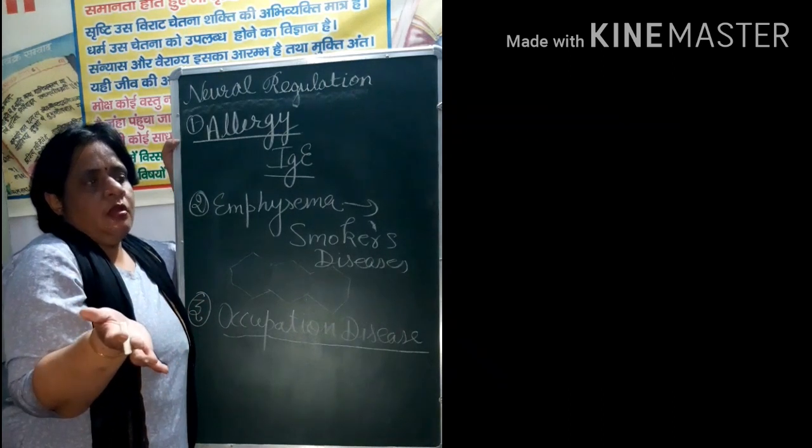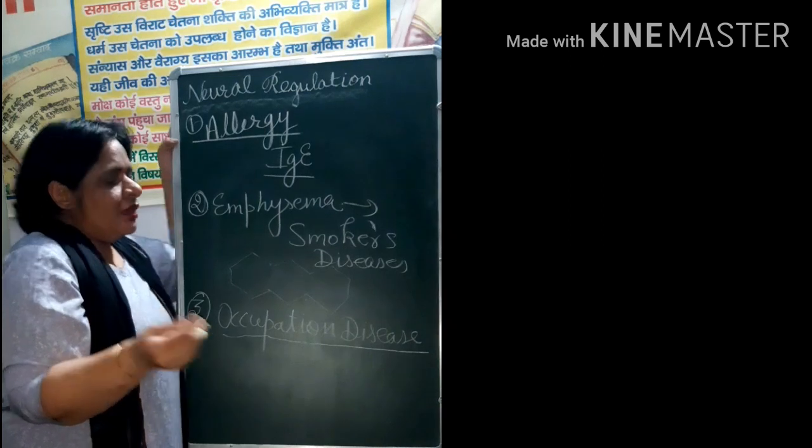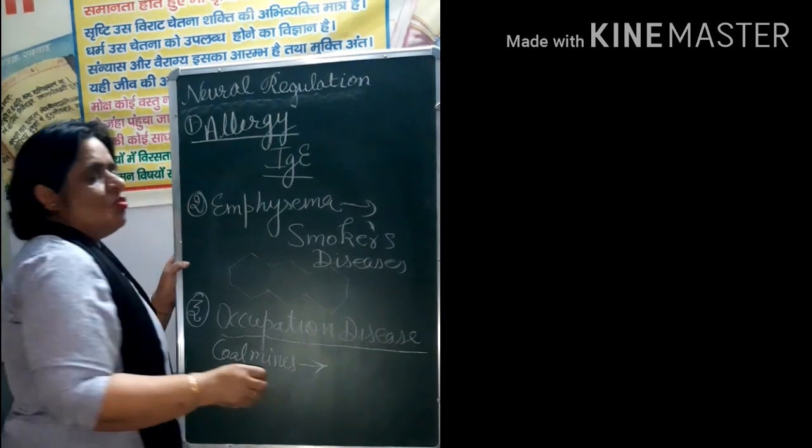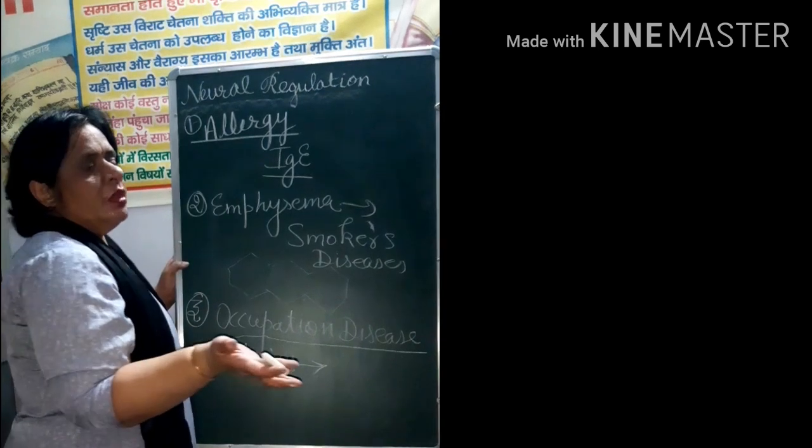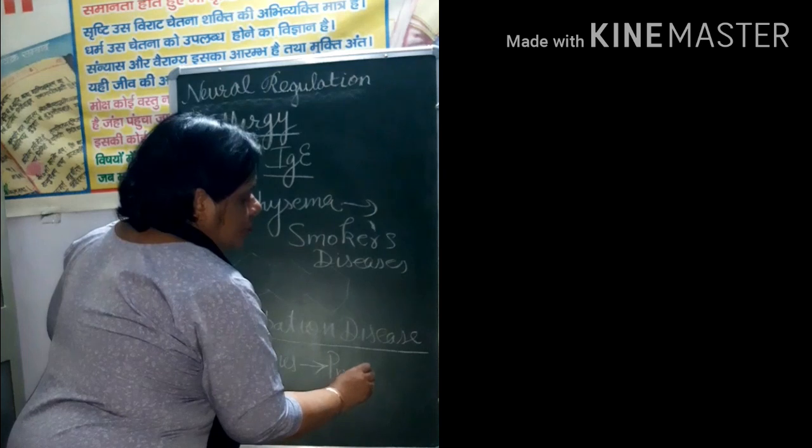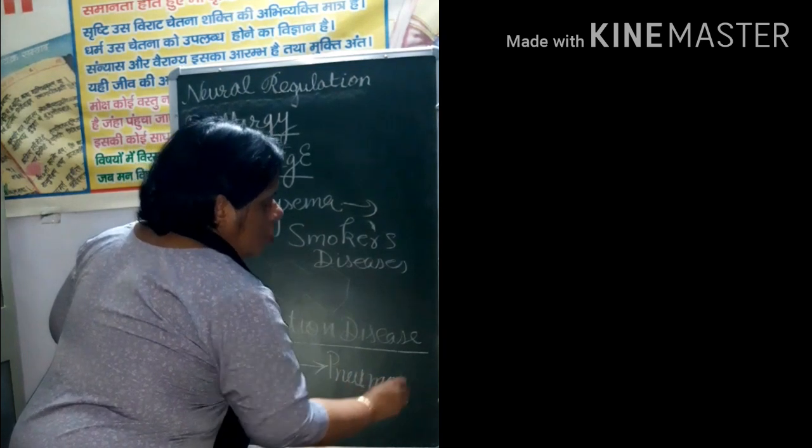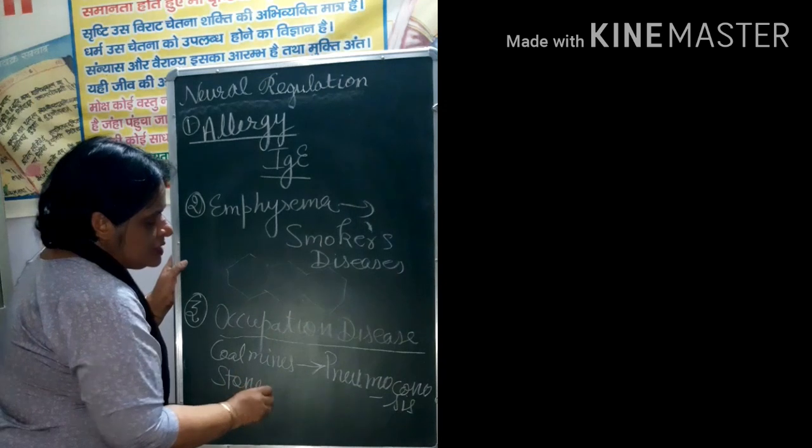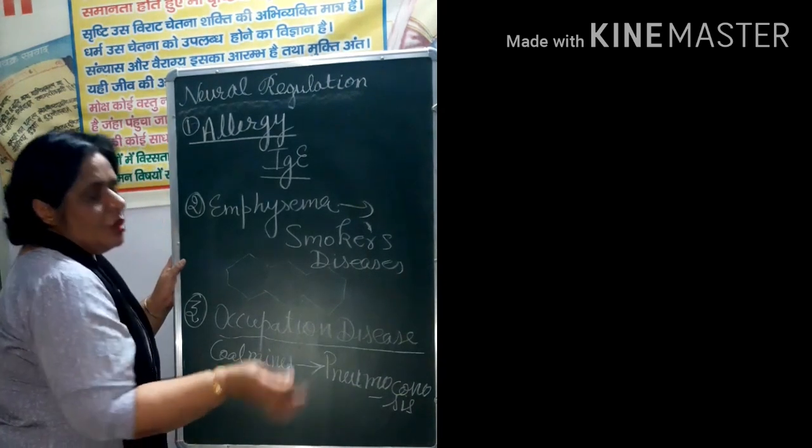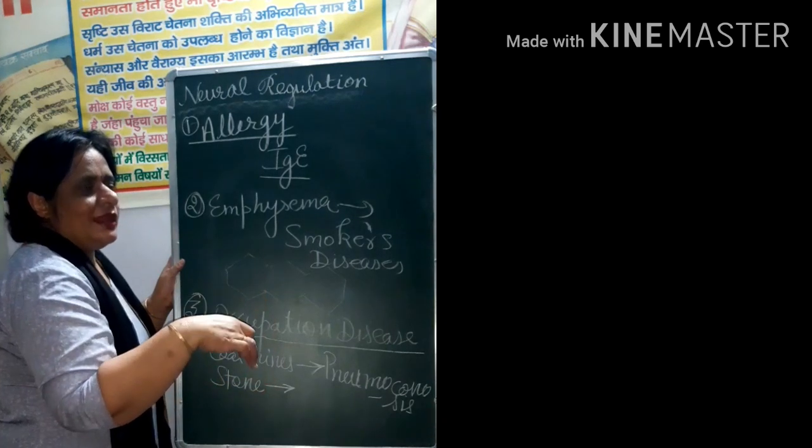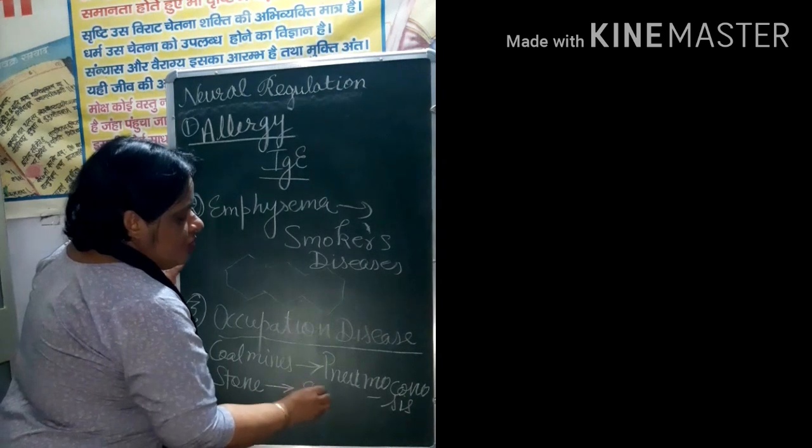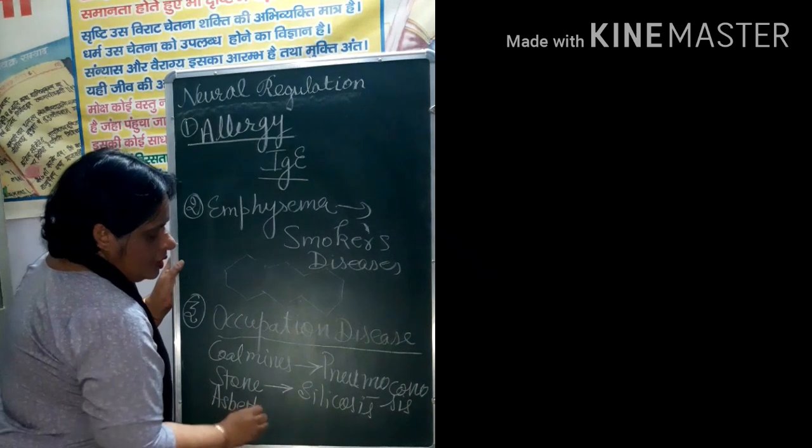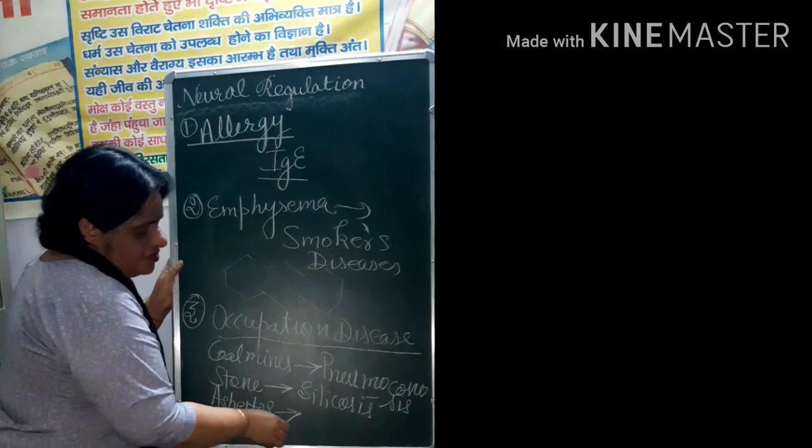They cause the damage to lung and they suffer from the respiratory problem. Phibus baat karna pade rha hai. Who inhale karen gi. This is called silicosis. Asbestos, asbestos is a cement material.